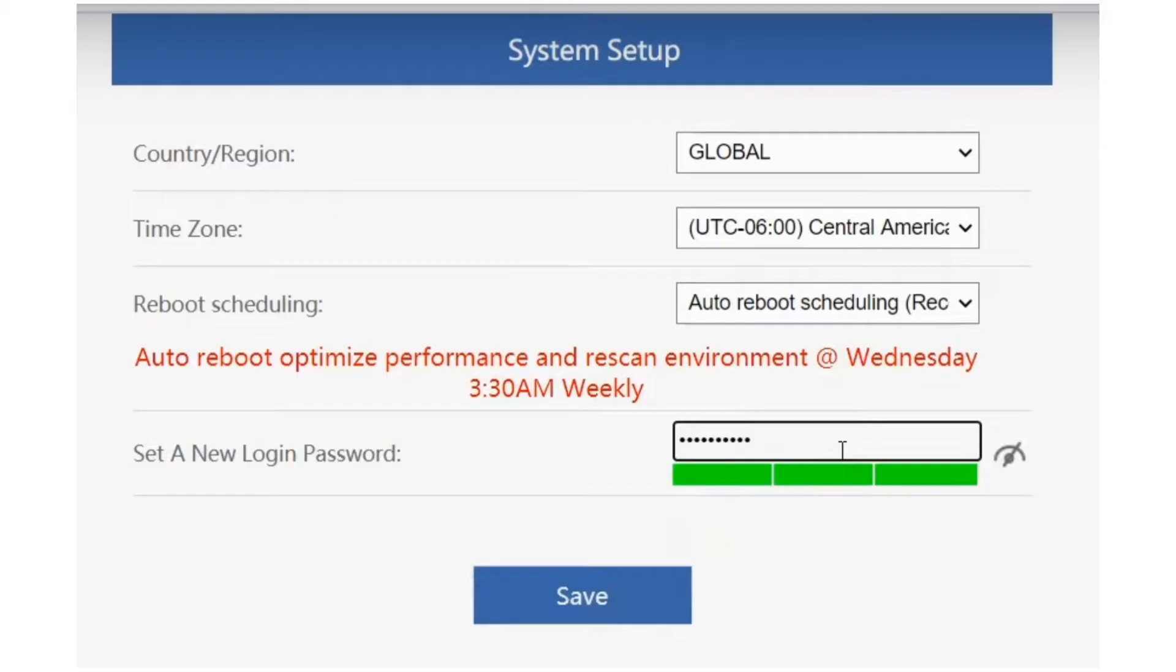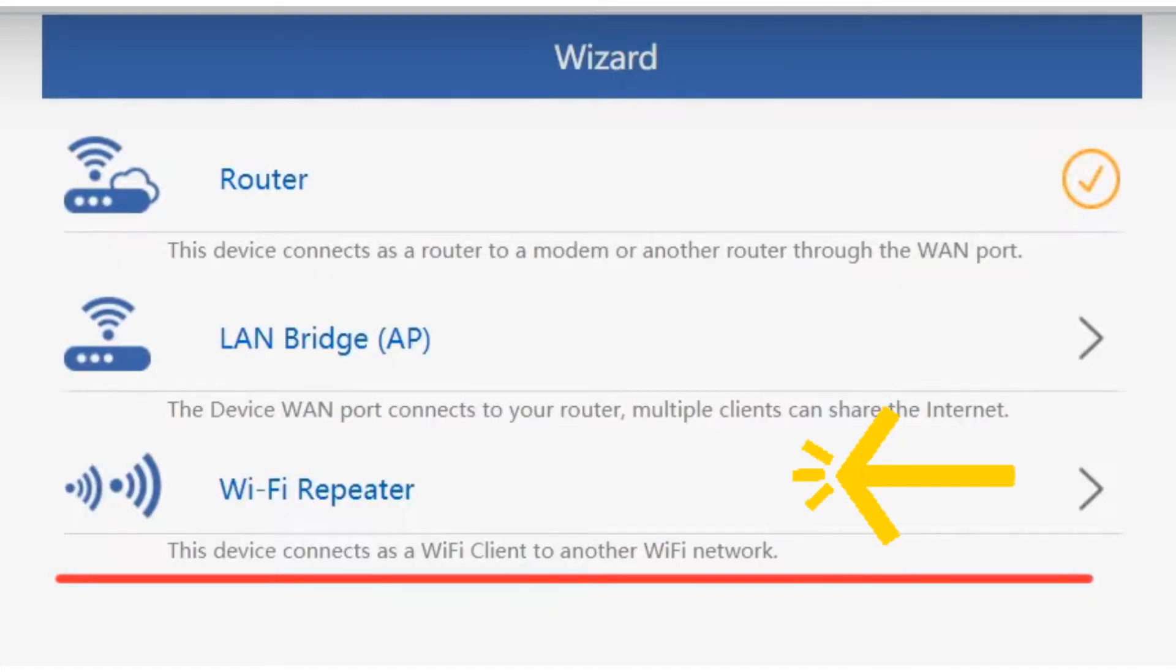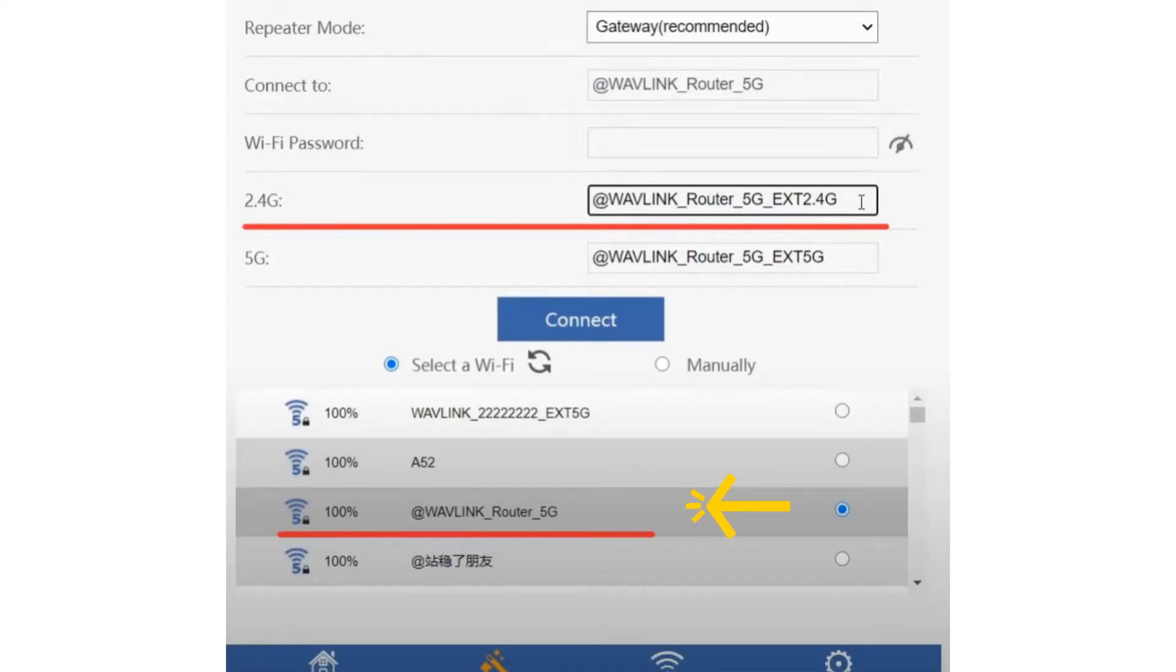On the next screen, select repeater mode. You will need to select your WiFi router SSID that you want to extend and type its password for verification. You can also customize your Wavelink outdoor extender SSID as per your choice.